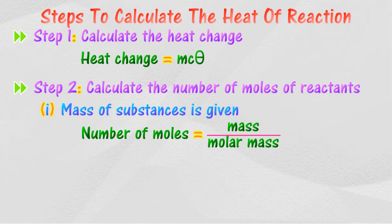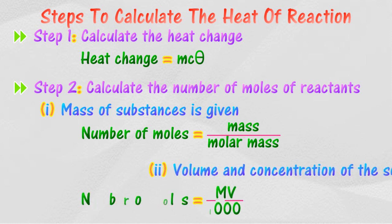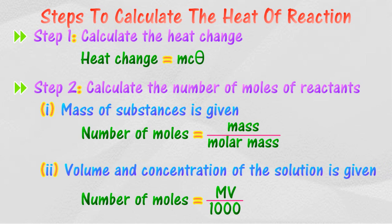If the volume and concentration of the solution is given, then the number of moles can be calculated by using formula MV over 1000, where M is the concentration of the solution and V is the volume of the solution.